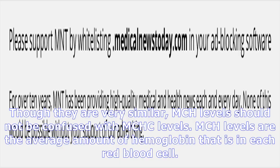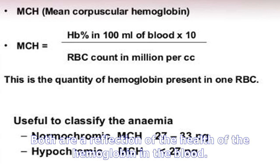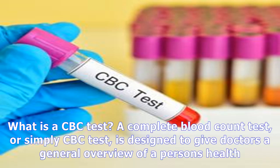Though they are very similar, MCH levels should not be confused with MCHC levels. MCH levels are the average amount of hemoglobin that is in each red blood cell, while MCHC levels are the average weight of that hemoglobin based on the volume of red blood cells.